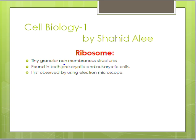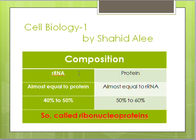Ribosomes are tiny, granular, non-membranous structures found in both prokaryotic and eukaryotic cells. They function in protein synthesis. Ribosomes constitute about 50% of the dry weight of cells and were first observed using the electron microscope. They are composed of ribosomal RNA (rRNA) and ribosomal protein in almost equal amounts — about 40–50% rRNA and 50–60% protein.